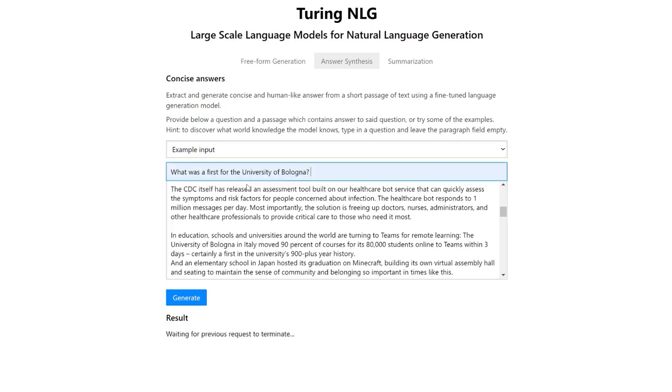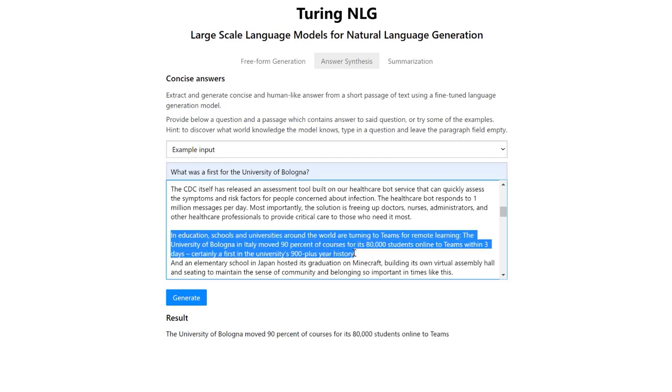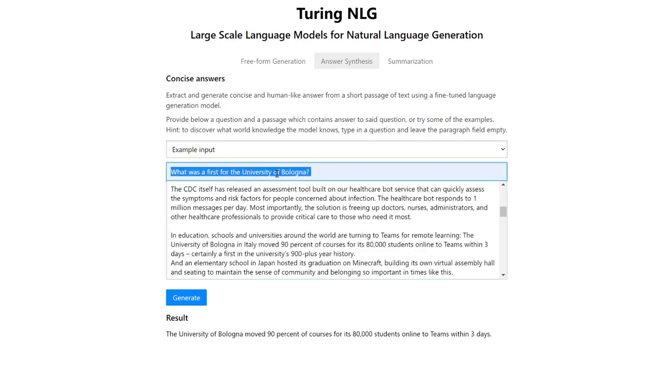What was the first for the University of Bologna? With some semantic understanding of the content, you can find the answer here. They moved 90% of its courses for 80,000 students online to Teams in three days, which is awesome.